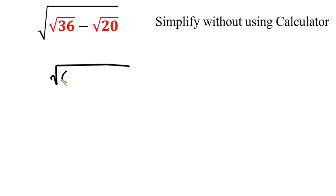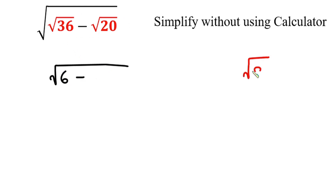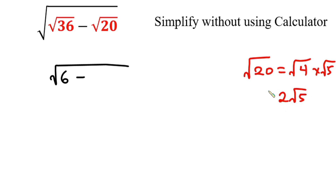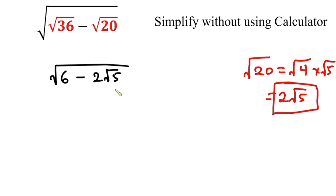Square root of 36 is 6, minus square root of 20, which is the same as square root of 4 times square root of 5. Square root of 4 is 2, times square root of 5. So in place of square root of 20 we're going to put 2 root 5. So we have 2 root 5.